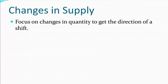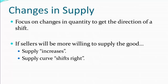In order to maintain our focus, we need to remember what we're focusing on is a change in quantity, to get the direction of the shift in supply. So the question we're going to be answering is: even if the price doesn't change for the good, what are things that would change our willingness to provide the good? If sellers become more willing to supply the good at any particular price, then we'd say the supply increases, or the supply curve shifts to the right, which we'll see in a minute graphically.